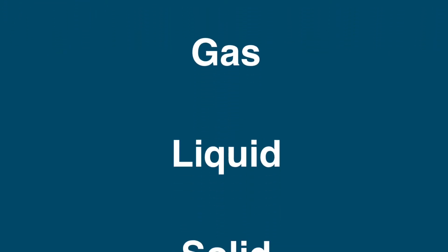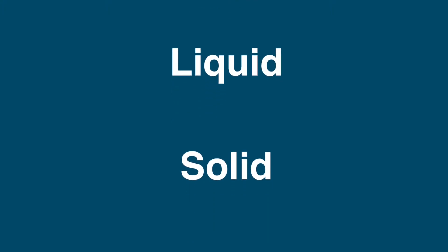Hi everyone. Before we start to talk about the water cycle, I want to make sure that you understand how the water cycle has the three states of matter. Matter is everything around you — it's made up of molecules and they're usually in three forms: gas, liquid, and solid. This song will help you to remember those three states of matter.